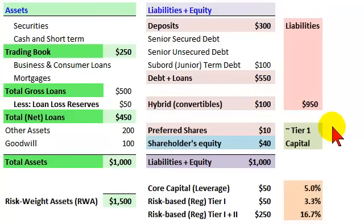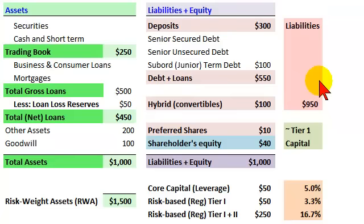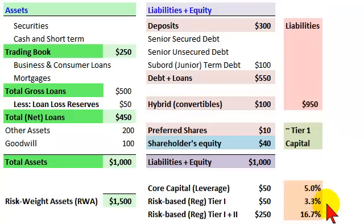Hi, this is David Harper of Bionic Turtle with a very brief introduction to the bank balance sheet — a stylized example of a depository institution. This is in response to a customer question. What I really want to get to is showing you three of the different ratios that we're reading about a lot in regard to bank capital adequacy, leverage ratios, and the Tier 1 capital ratios.